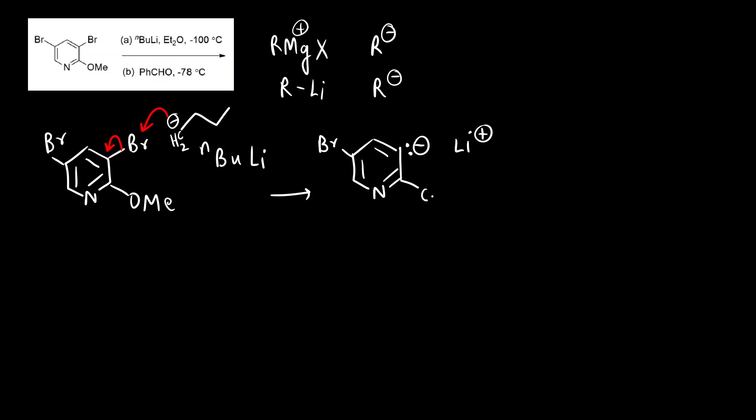This can form bond with Li plus, so what will be formed is O-Li - a carbon-lithium bond. Why this is called metal-halogen exchange? Because you can see the halogen, the bromo group, is replaced by the metal, lithium. That is why this is called metal-halogen exchange - halogen is exchanged by the metal.